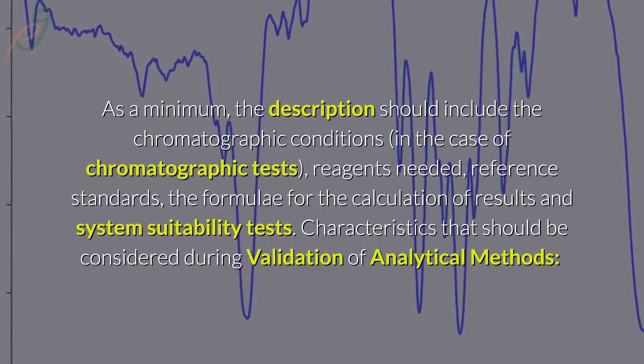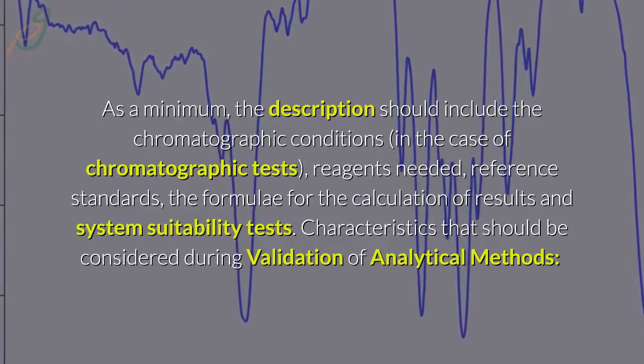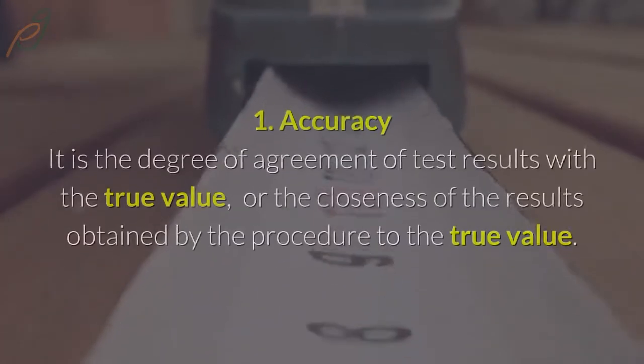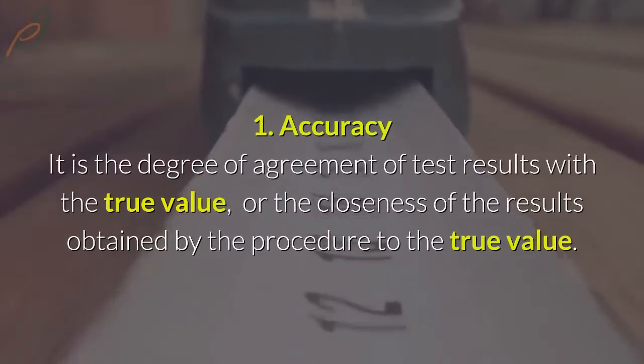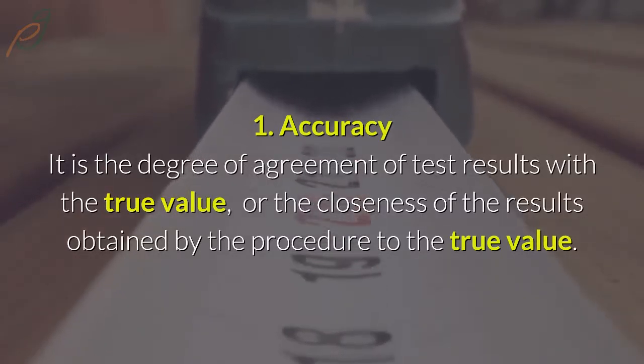Characteristics that should be considered during validation of analytical methods include: accuracy, precision, robustness, linearity, range, specificity, detection limit, and quantitation limit.